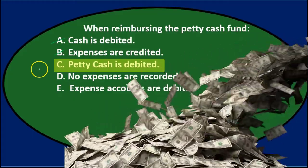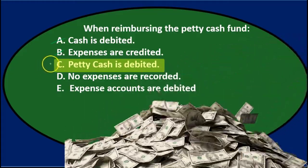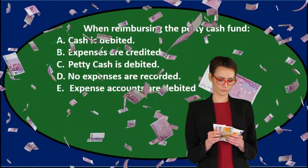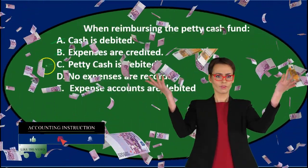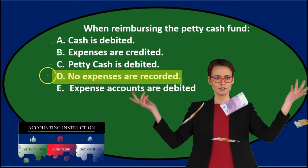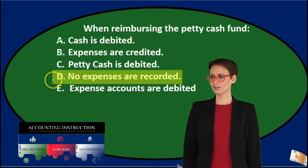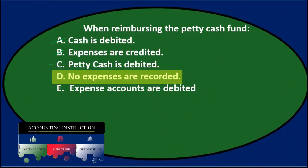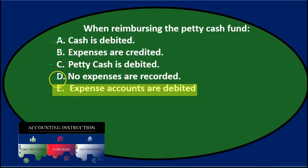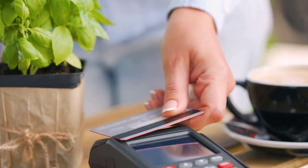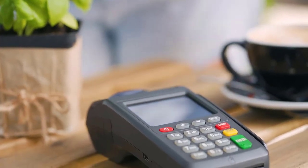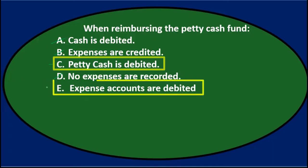C says petty cash is debited — you might think that would be the case, so we'll keep that for now. D says no expenses are recorded — but this is actually the point in time when we do record the expenses, so it's not that. E says expense accounts are debited — and if we do anything to expense accounts, we would be debiting them since expenses go up in the debit direction. So we're left with C and E: petty cash is debited versus expense accounts are debited.